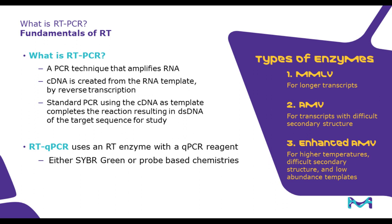Moving forward to take a closer look at RT-PCR, or reverse transcription PCR — this is a PCR technique that amplifies RNA. Because DNA polymerase cannot amplify single-stranded RNA, reverse transcription is necessary to create cDNA from an RNA template. That cDNA is then amplified using standard PCR or qPCR protocols. There are a number of different RT enzymes that can be utilized. MMLV is a preferred enzyme for longer transcripts and reduces RNase H activity. AMV is a common enzyme with higher thermostability, ideal for transcripts with difficult secondary structures. Enhanced AMV is engineered for higher temperatures, difficult secondary structures, and low-abundance templates.